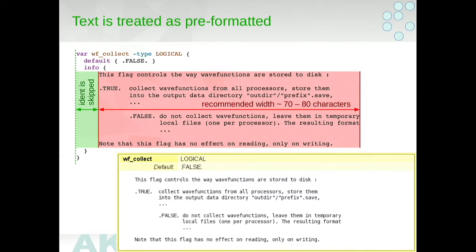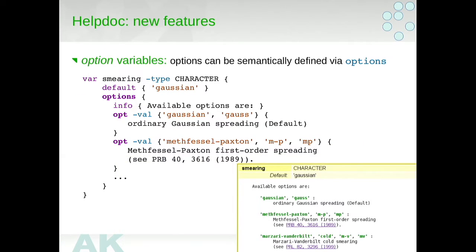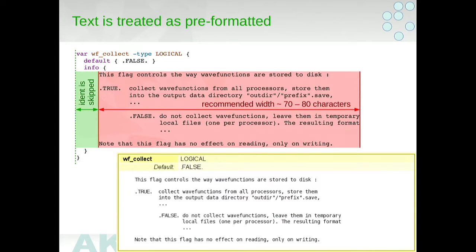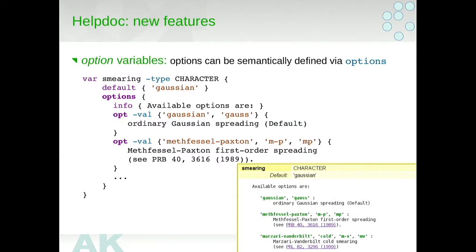Last year, there were some new features added, and one of these is options, because for some variables, like smearing, it is not enough to say that it is of character type, because basically it has some options which are predefined. With these options, this one is a comma separate list, you define basically this semantically, and then this can be exploited in order to easier update the pwgui. It's a bit more of writing, but at the end, you also get somewhat nicer formatting in the HTML file that describes the input.